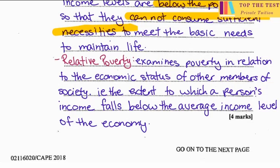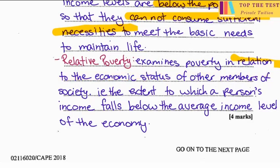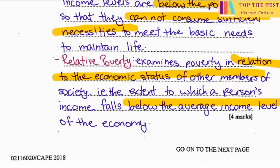Relative poverty examines poverty in relation to the economic status of other members of society. You are not looking at it in absolute terms and not comparing your income to the poverty line; instead, you are comparing it to other persons in society. It is the extent to which a person's income falls below the average income level of the economy.